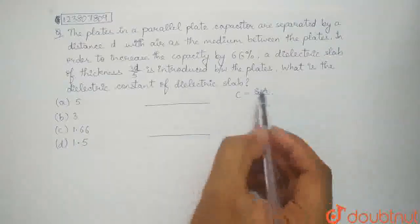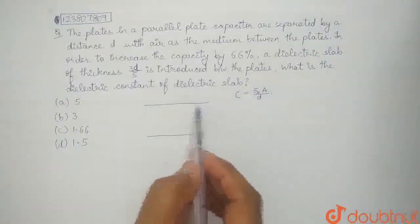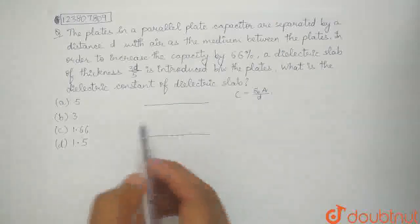Where d is the distance between them, a is the surface area of this plate, the area of cross-section of this plate.